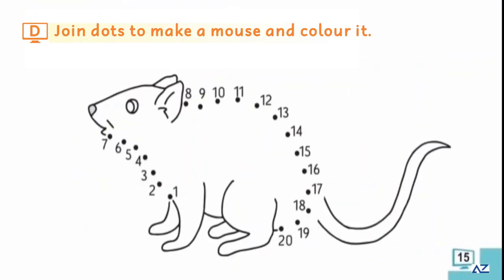My dear students, part D is join the dots. Join dots to make mouse and color it. There is a mouse here. We have to join dots and color it. One, two, three, four, five, six, seven, eight, nine, ten. We will come here to twenty. We will match dots.